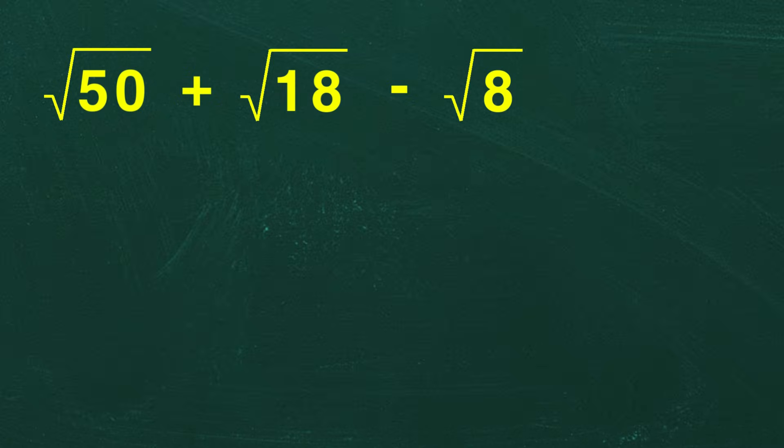Hello everyone, today we are going to simplify an expression involving square roots. The problem is the square root of 50 plus the square root of 18 minus the square root of 8.